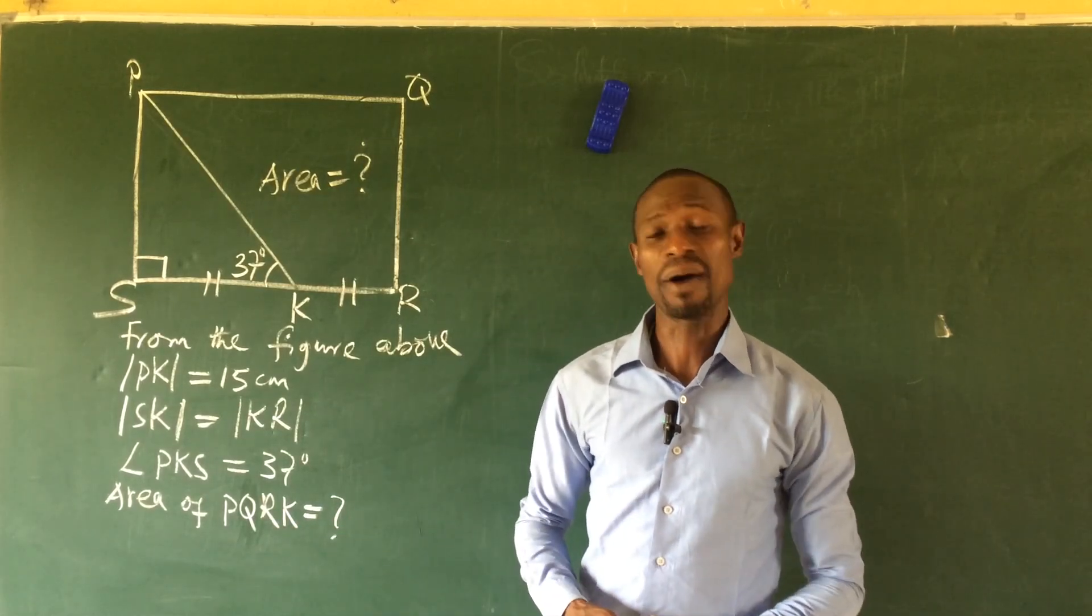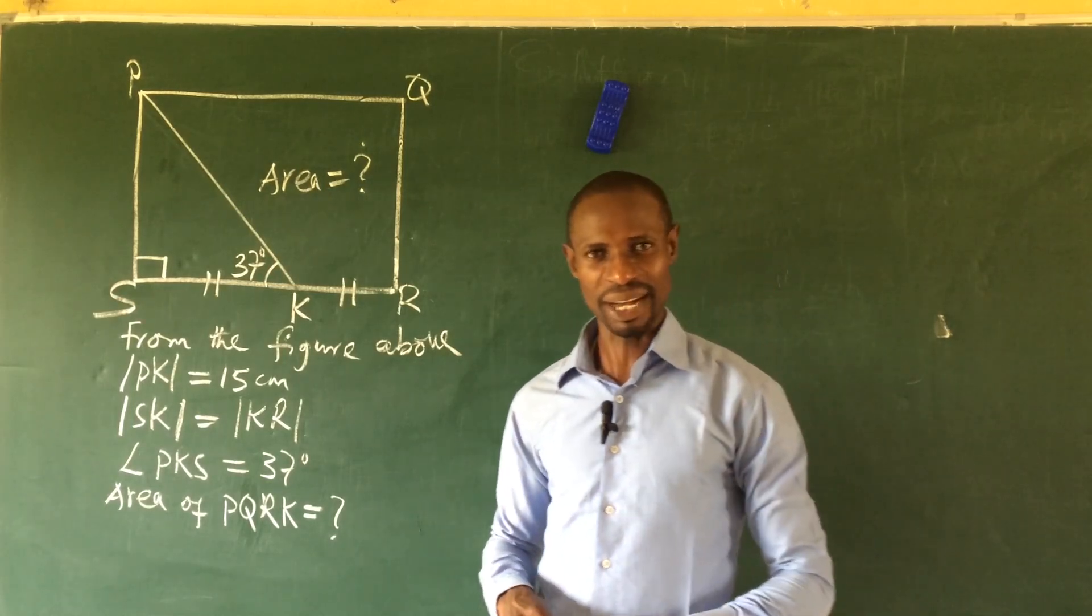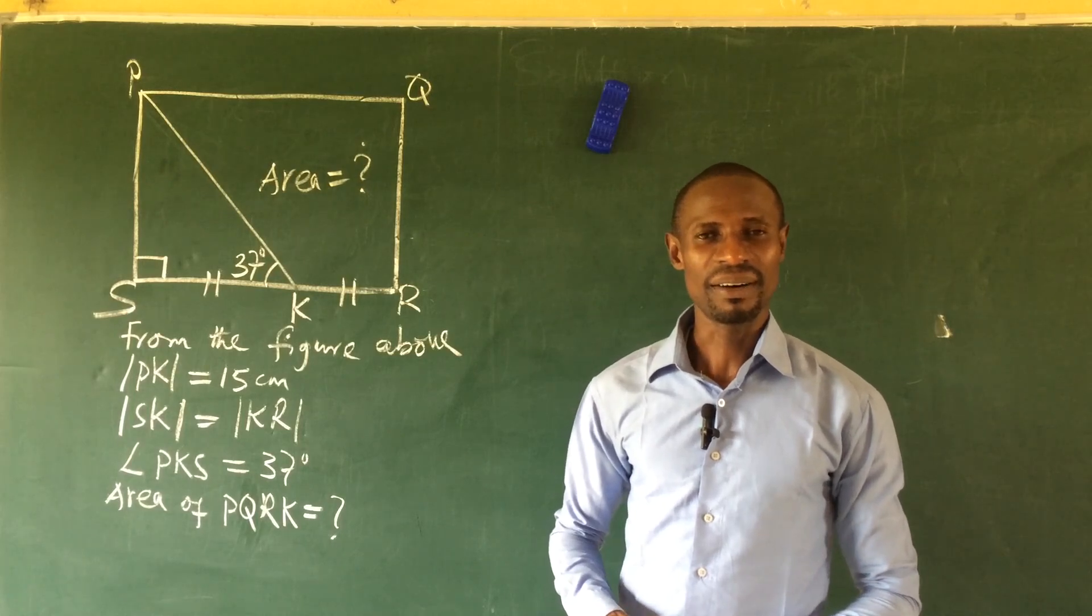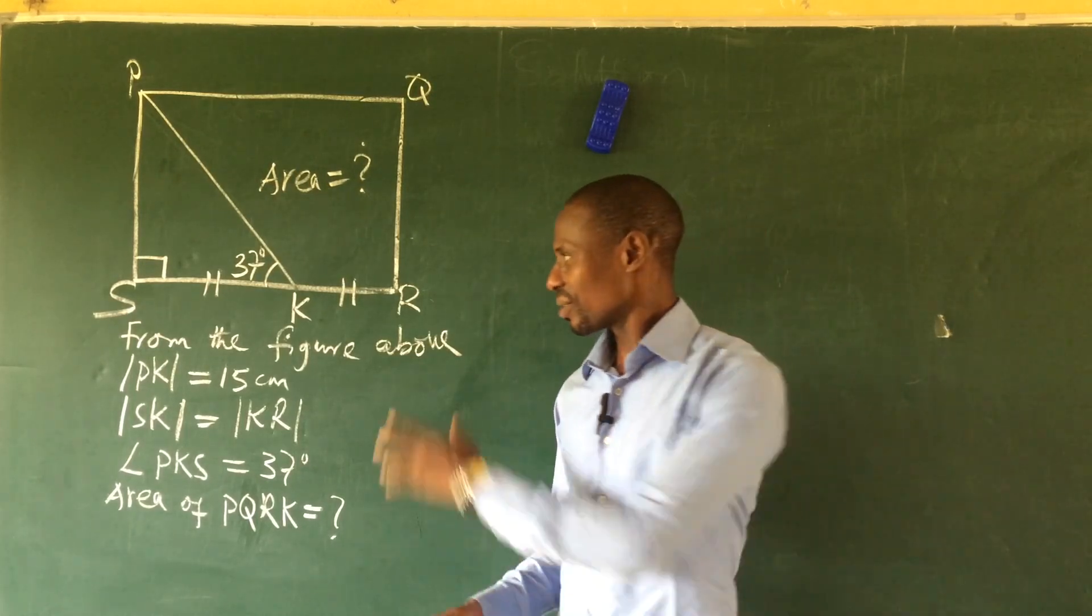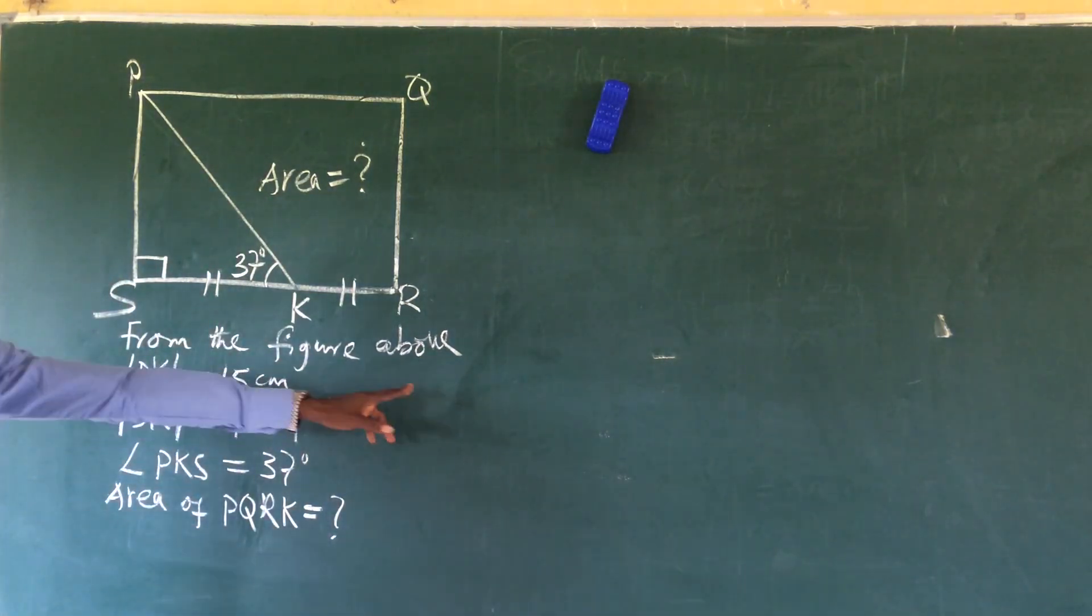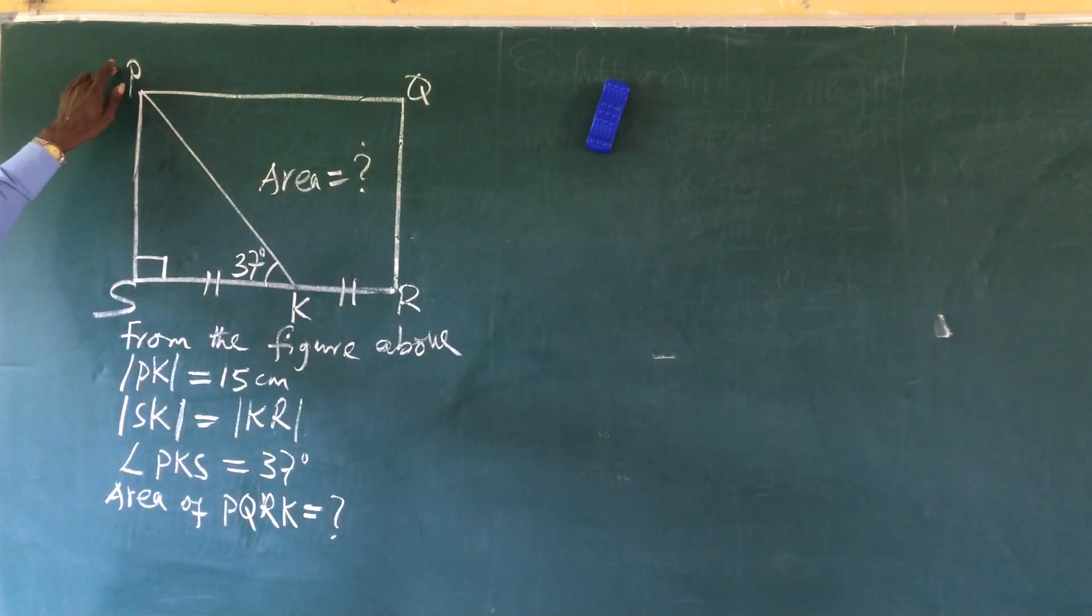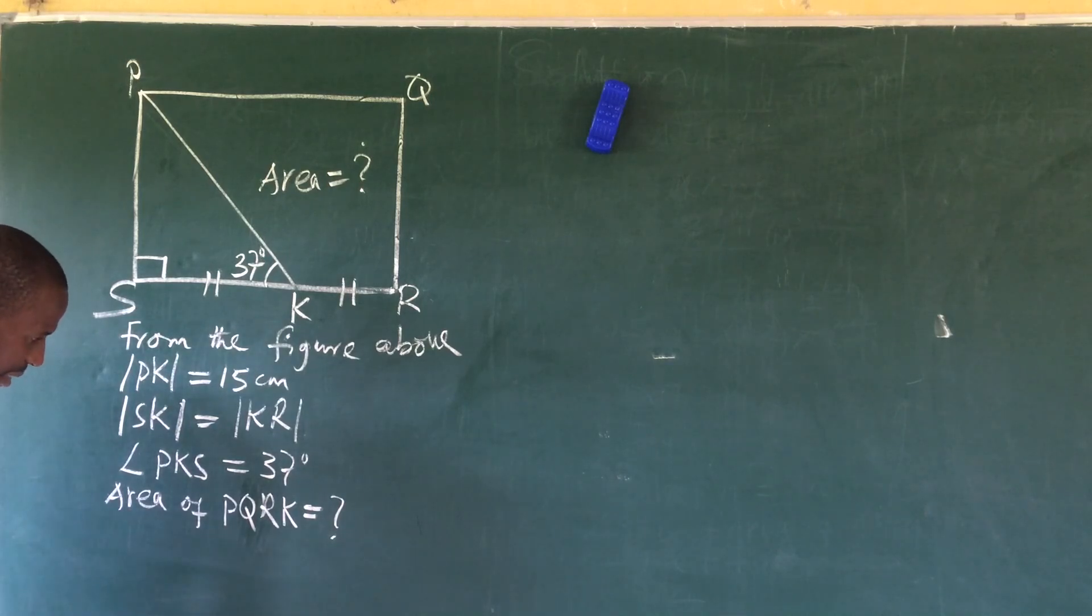Before we go into today's challenge, if you're new to this channel kindly subscribe and turn on the bell notification button so that you get notified whenever we drop a wonderful video. Let's take a look at this question. From the figure above, PK is equal to 15 cm, SK is equal to KR, angle PKS is equals to 37 degrees. What would be the area of PQRK?